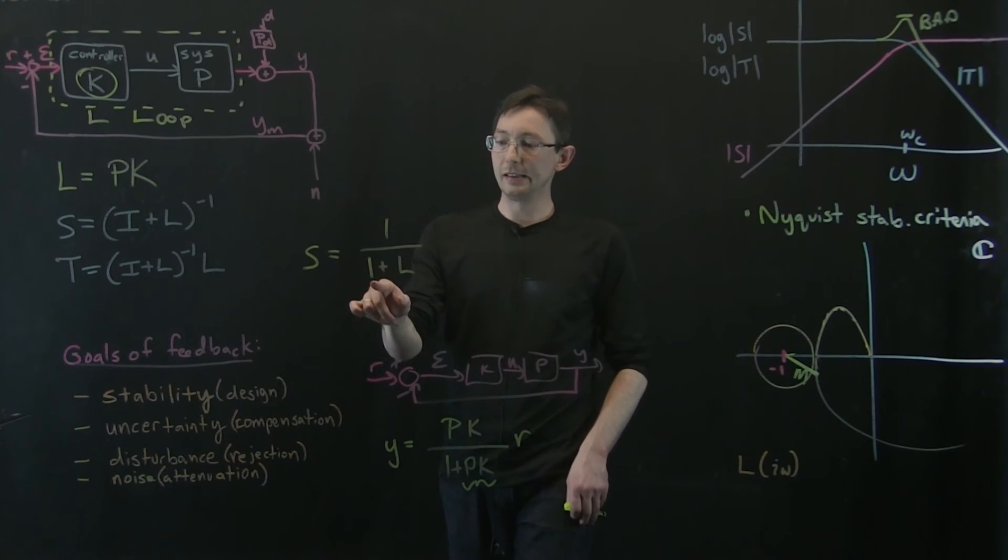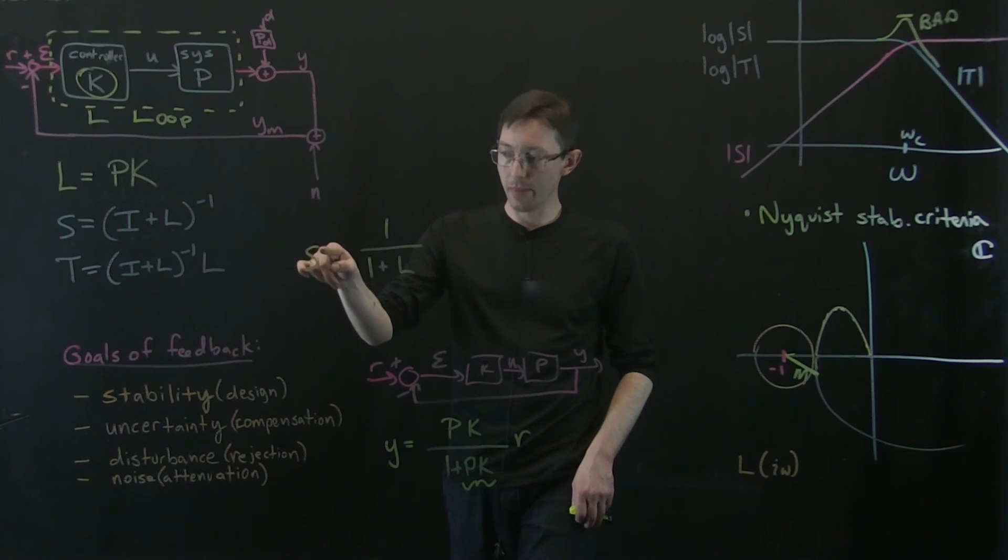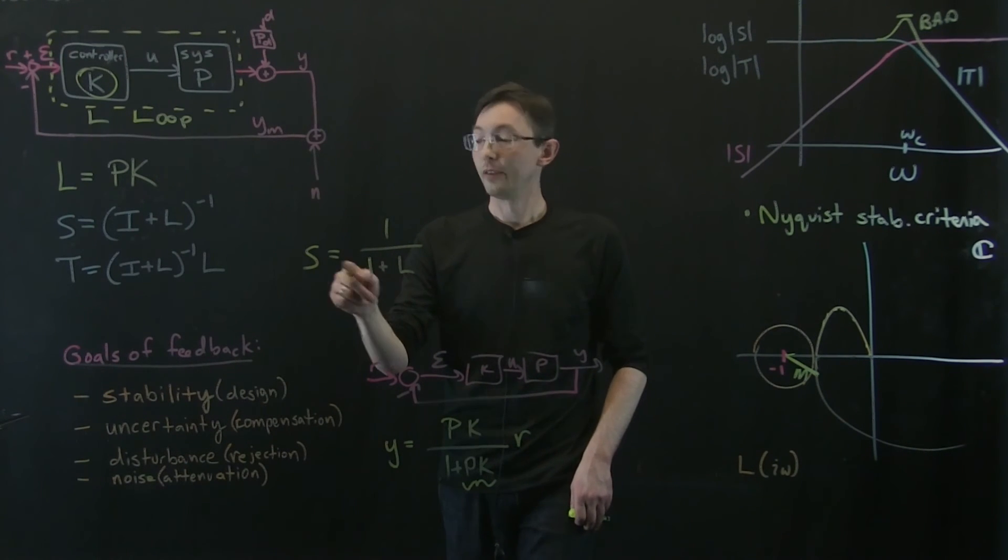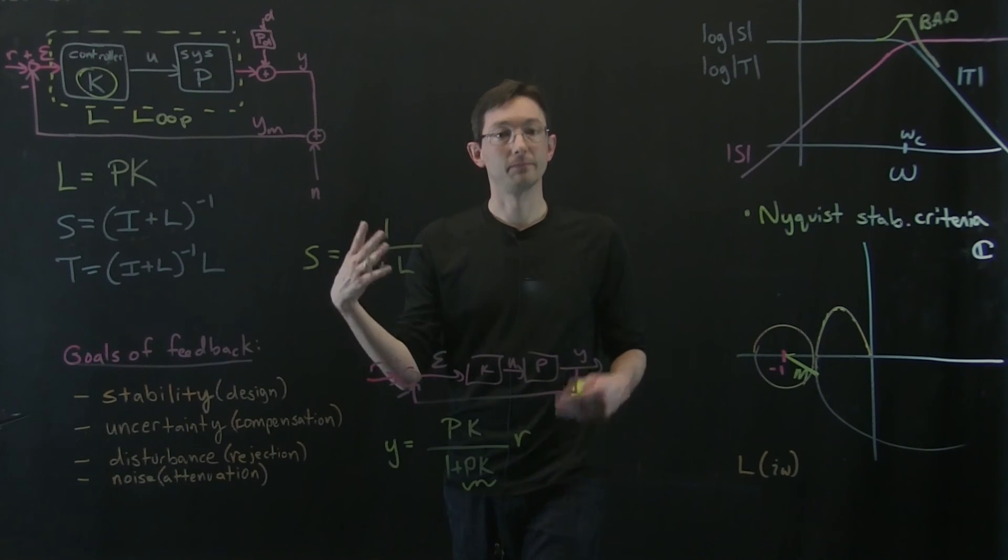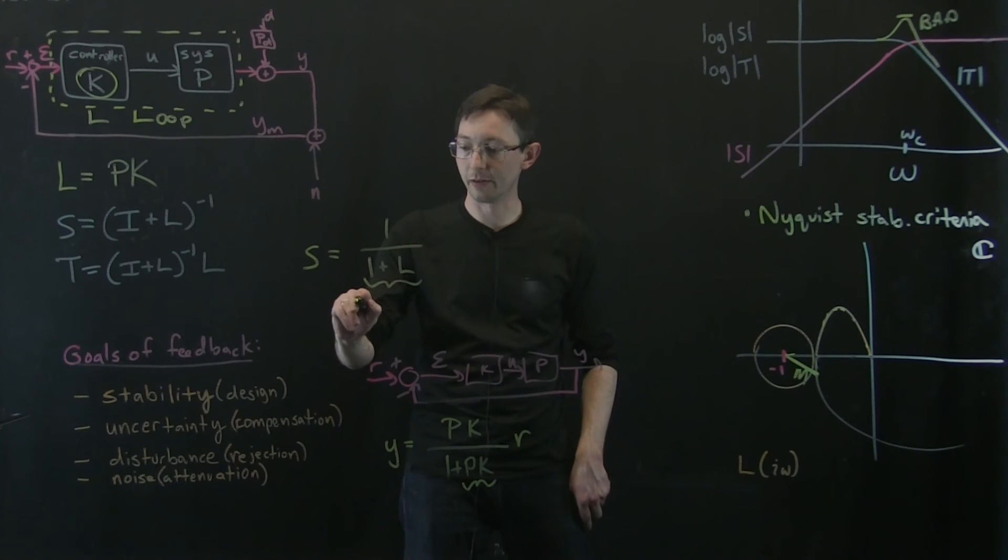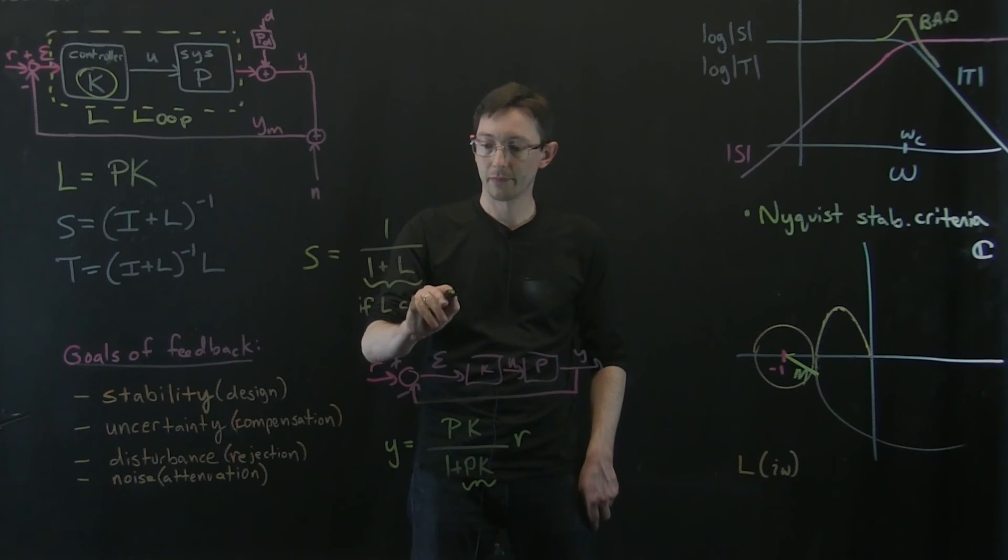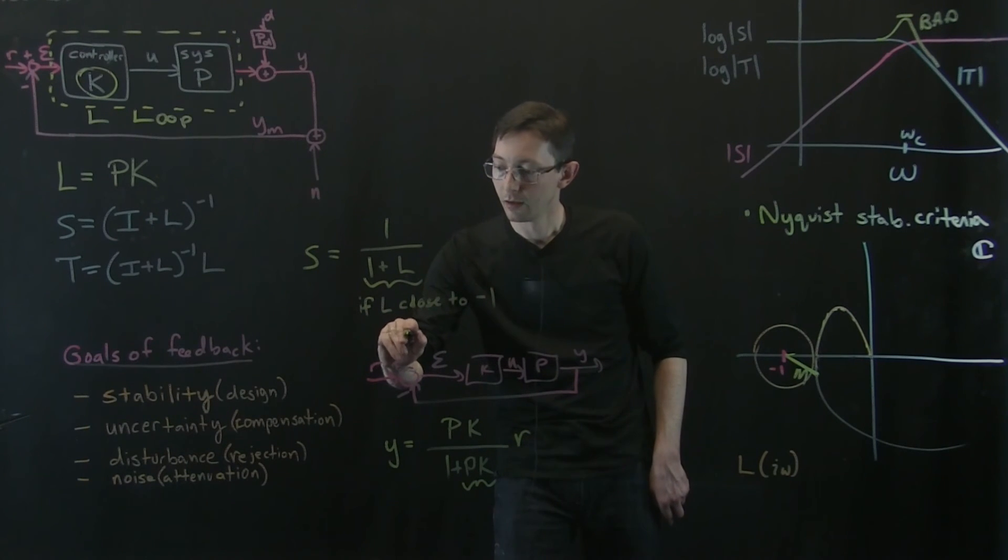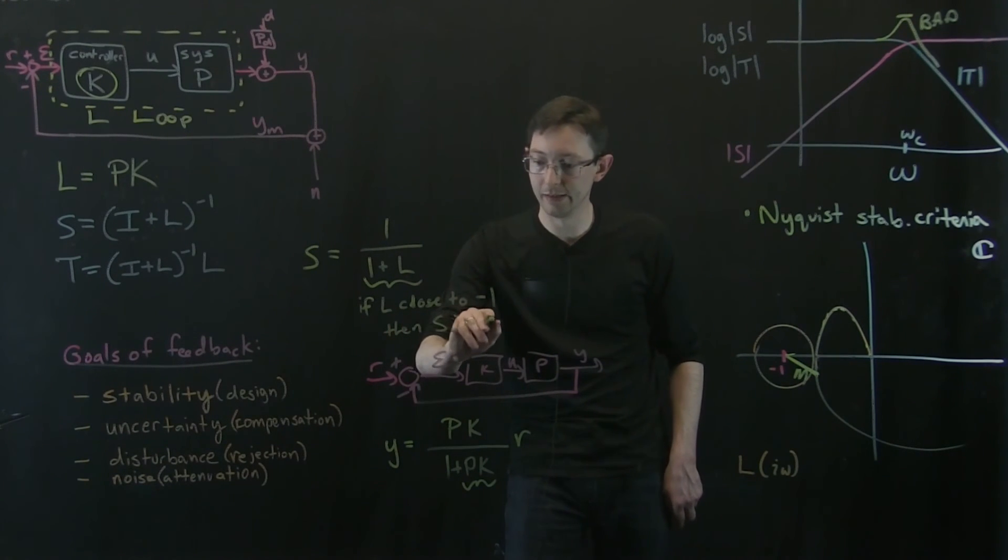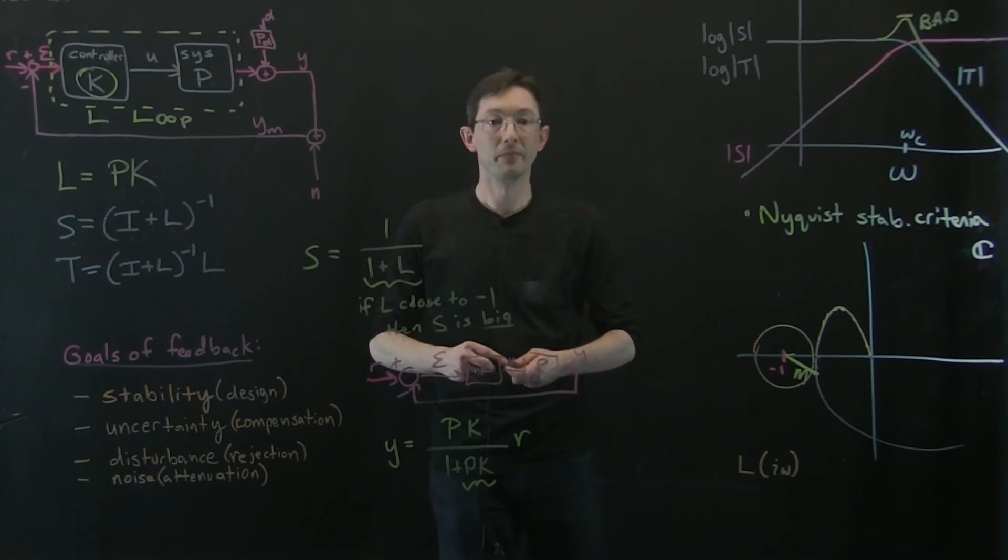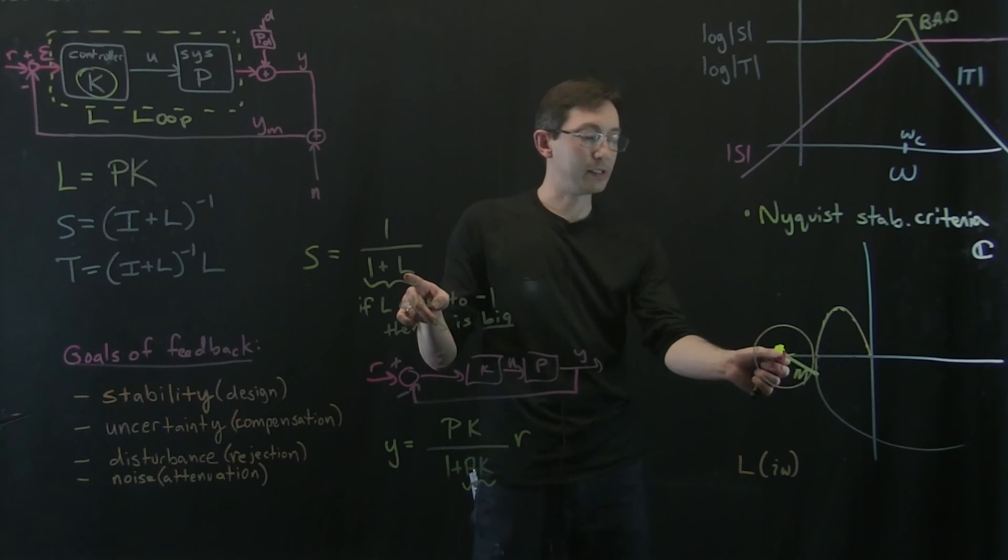the closer that L is to negative one, the bigger S is. That's simple. The closer this is to negative one, so if L close to negative one, then S is big, right? I get one divided by a really, really small number. So the closer L is to negative one, the less robust my system is, the bigger S is at that frequency.